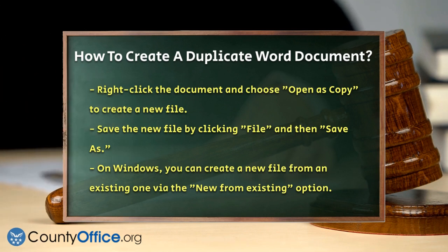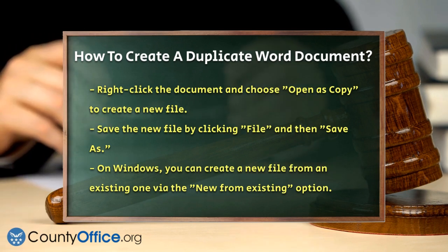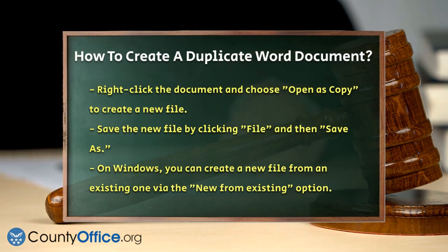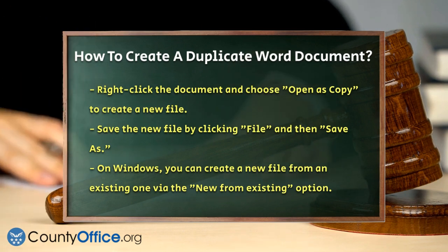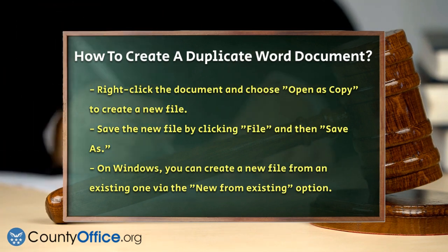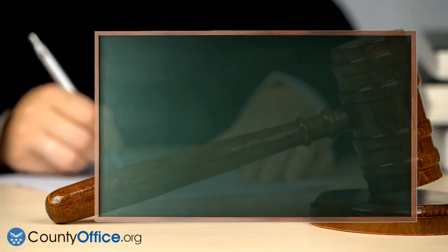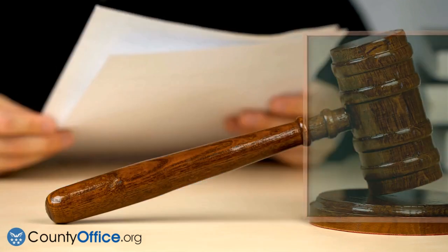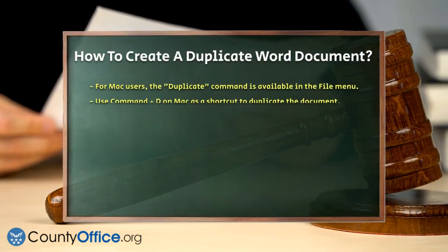On a Mac, you can use the Duplicate command in the File menu. Open the document, go to the File menu, and select Duplicate. This will create an exact copy of the document, which you can then save with a new name. Alternatively, you can use the keyboard shortcut Command+D to achieve the same result.